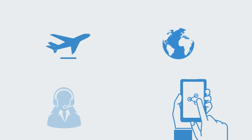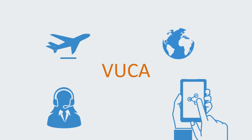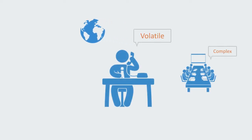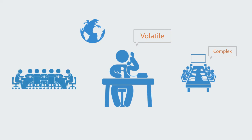The net result of the complex environment explored in the previous section is what the business world calls VUCA. VUCA is an acronym for Volatility, Uncertainty, Complexity, and Ambiguity. It captures the most salient challenges faced by leaders operating in complex environments.